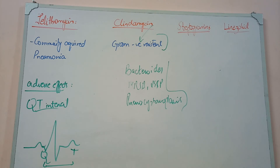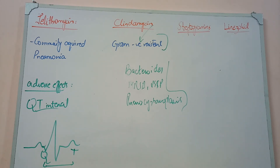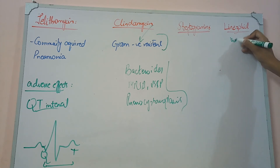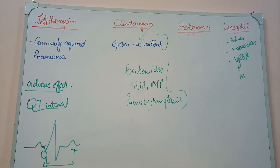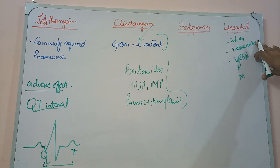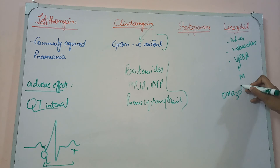Linezolid is also an important ACQ scenario drug. Scenarios involve very resistant bacteria where you don't have other antibiotic options. Linezolid is important in this situation because its adverse effects are very low and its interactions with other drugs are also very low. It is active against vancomycin-resistant strains, penicillin-resistant strains, and resistance develops slowly against it because it acts uniquely. You have to remember that linezolid belongs to the oxazolidinediones chemical class — that is an important point to remember.